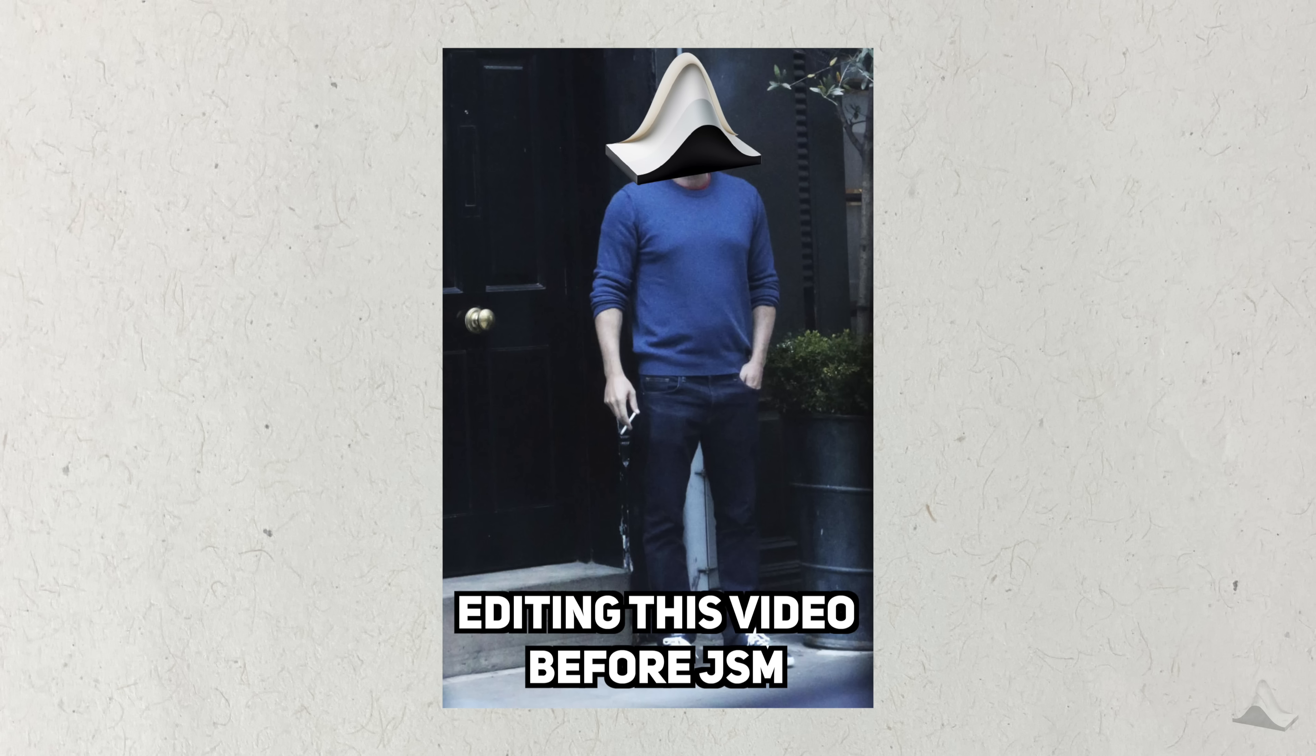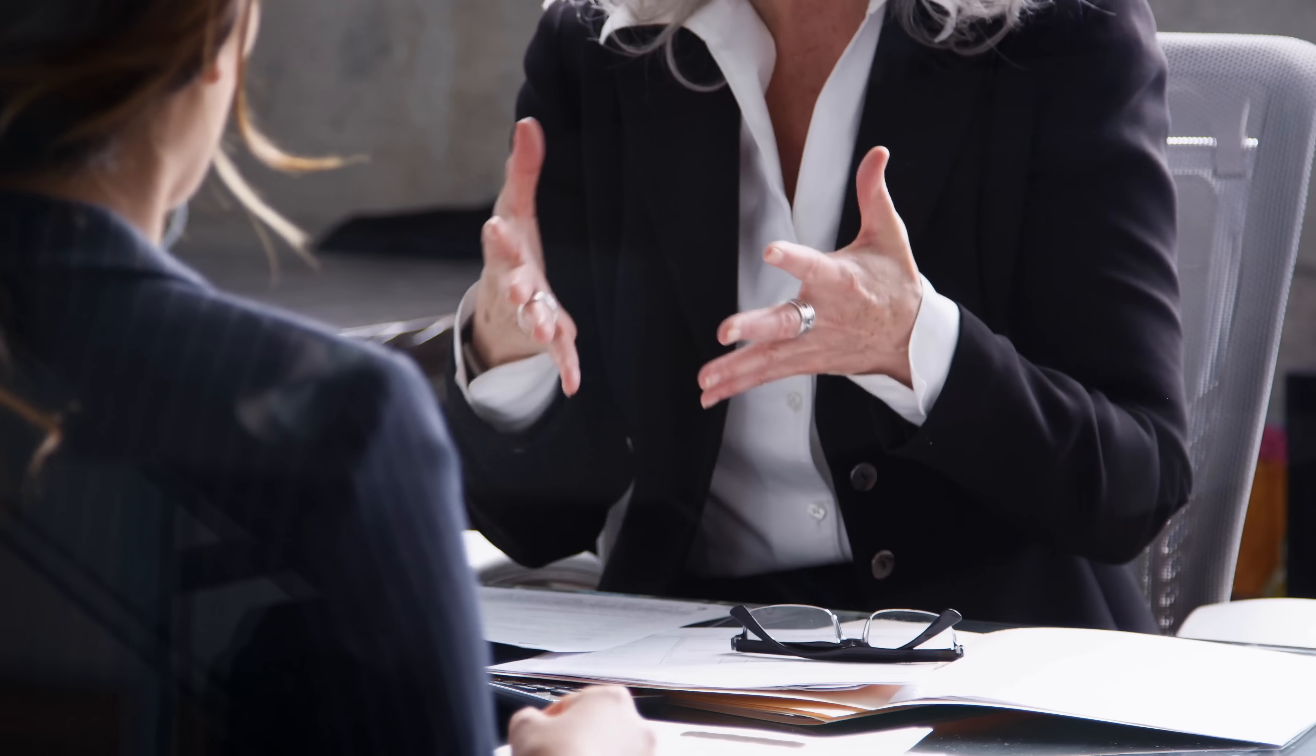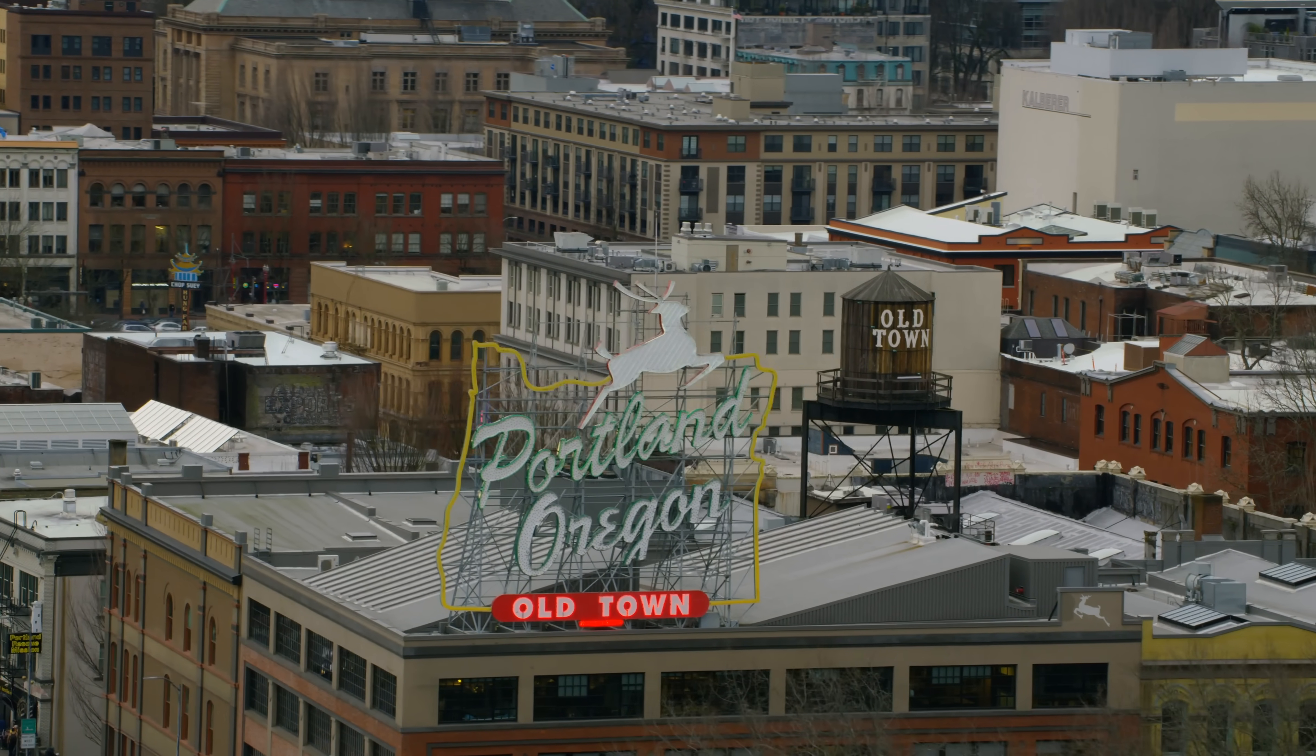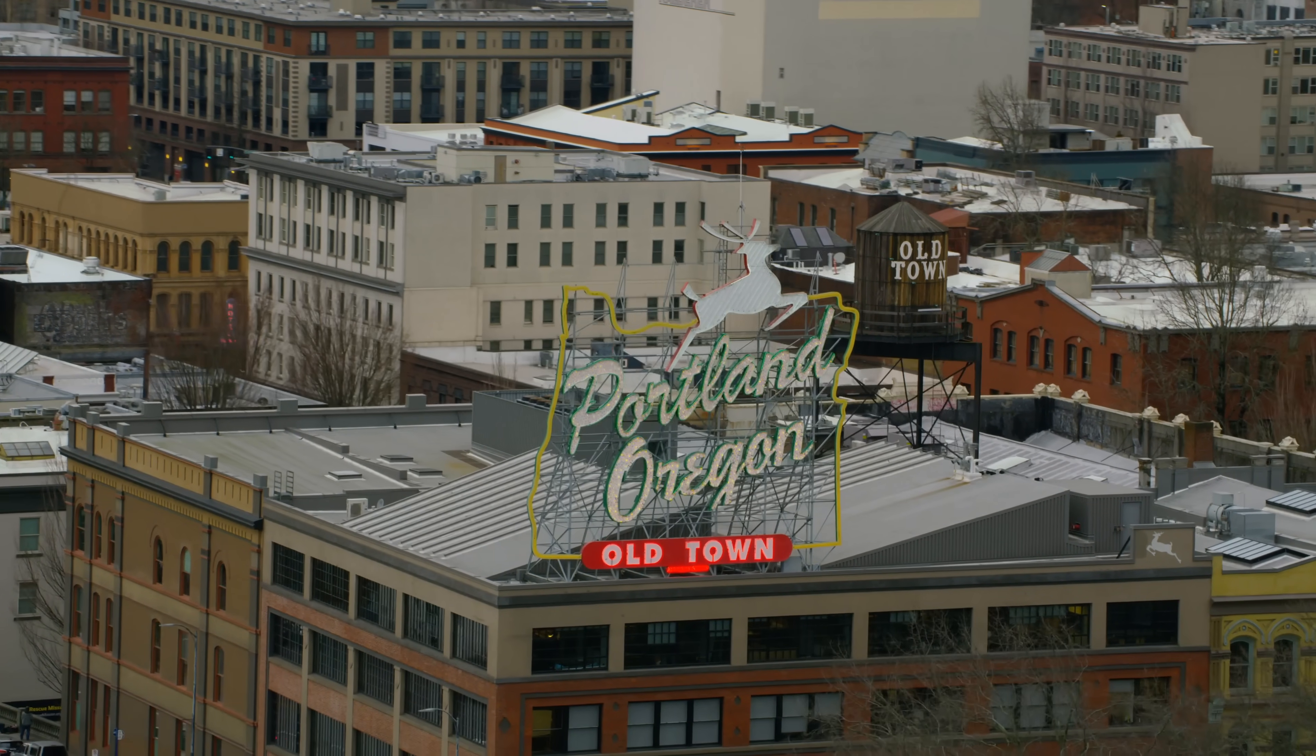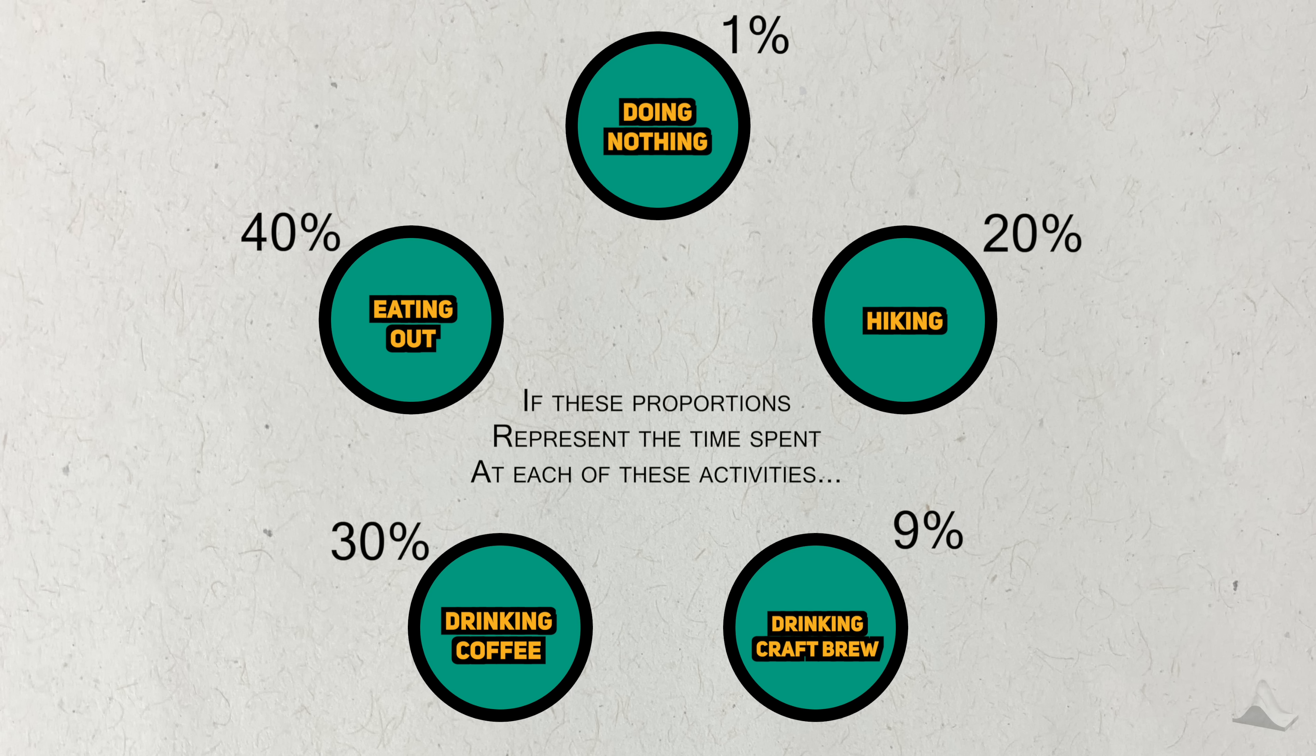As I'm editing this video, I'm getting ready for the Joint Statistical Meeting, or JSM. This year, it's located in Portland, and I've never been before. In between interviews for a potential job, I want to spend some time enjoying the city of Portland itself. I want to spend my time in Portland like a local. For simplicity, let's say that these five things represent all the things a Portland local does. If these proportions represent the amount of time a local spends doing these activities, then I want to spend all my waking hours to be spent like this.